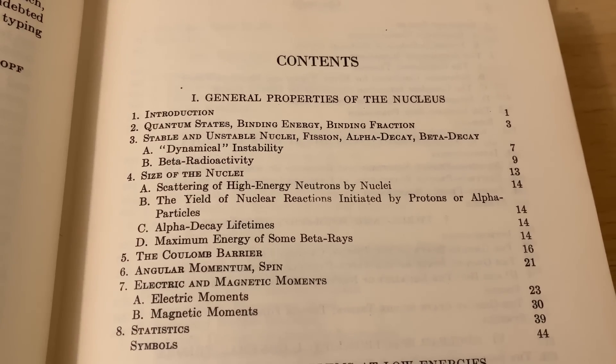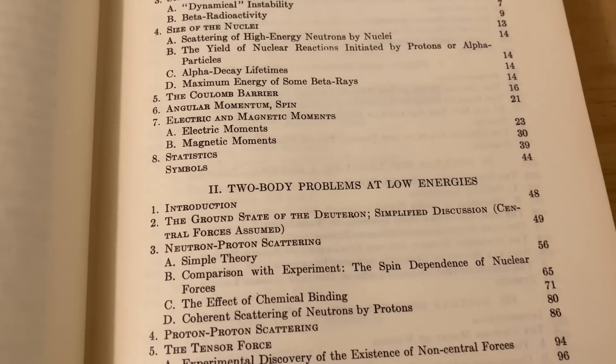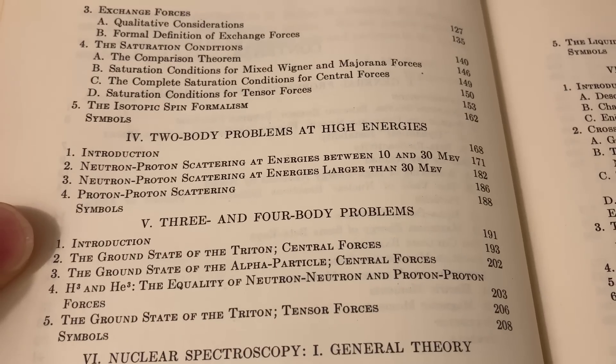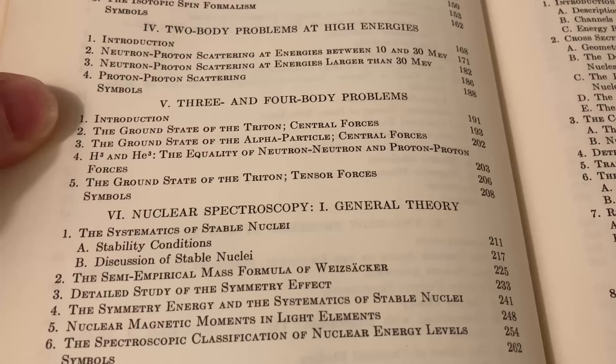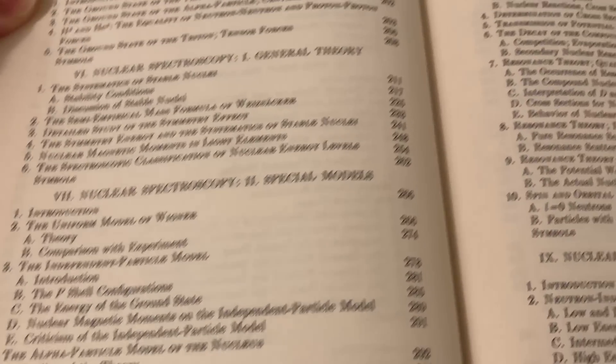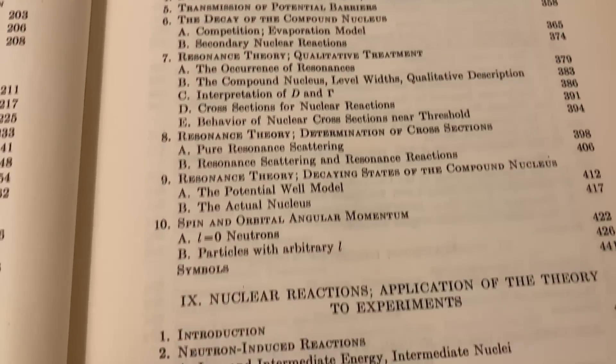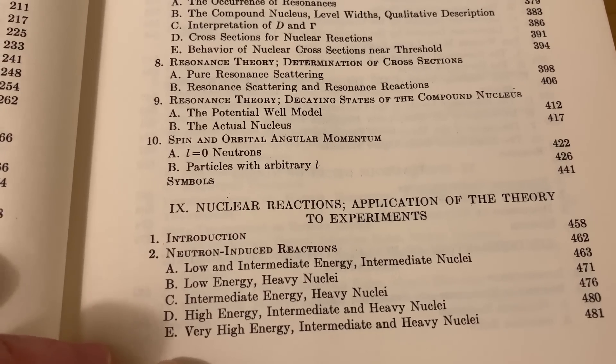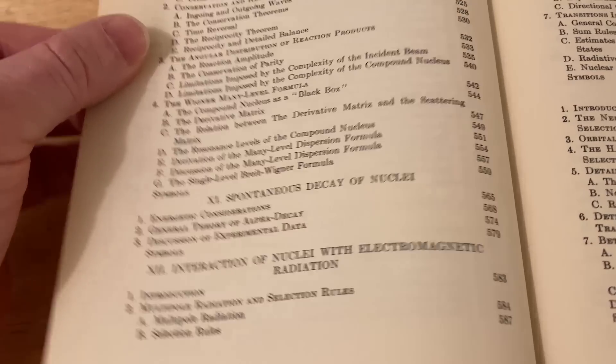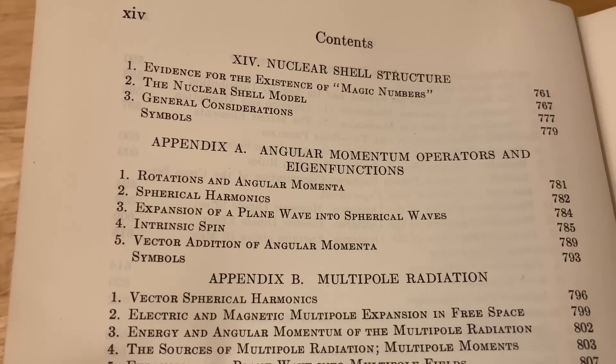Here are the table of contents. And the table of contents is huge. It starts off with general properties of the nucleus. Then it goes on to two body problems at low energies, nuclear forces, two body problems at high energies, three and four body problems, nuclear spectroscopy. Really intense stuff. I'm just going to go through it slowly so you can see the topics. Nuclear reactions, general theory. And then applications to the theory to experiments. The contents is just immense. There is so much physics in this book. It's just incredible how much knowledge there is. Beta decay.